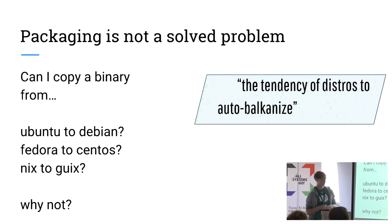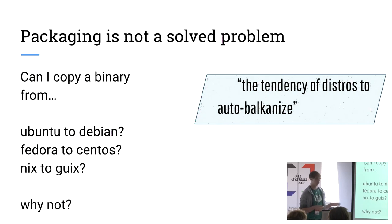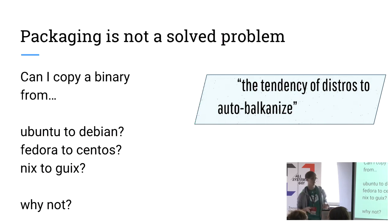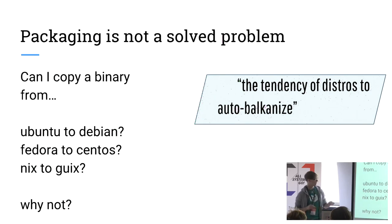If I have an Ubuntu machine and a Debian machine, these have almost the exact same tooling, almost the exact same packages. But can I reliably copy a binary from one to the other? Maybe. Would I bet on it? No. If I have Fedora and CentOS, it's the same thing — mostly RPM and YUM and some new acronym lately. Can I copy a binary? No.